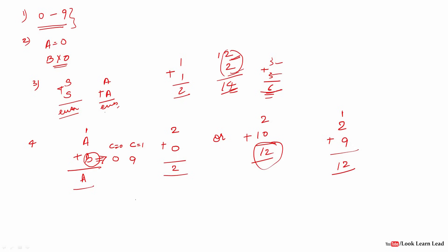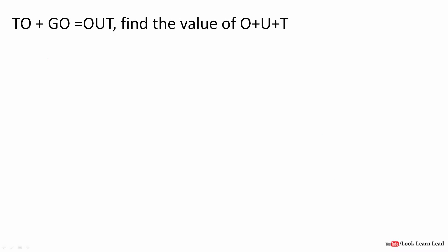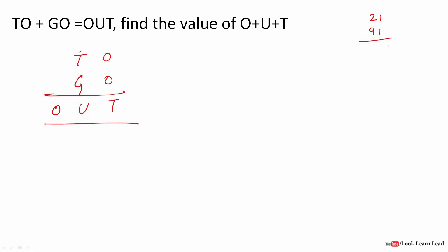Let's move on to the first problem: TO + GO = OUT. We need to find the value of O + U + T. One important rule: when adding two two-digit numbers and getting a three-digit result, the most significant digit is always 1. So here we are adding TO and GO to get the three-digit number OUT, which means O must be 1.